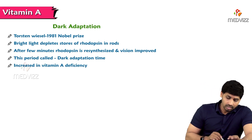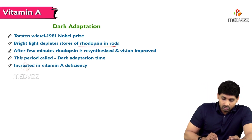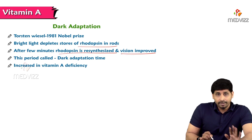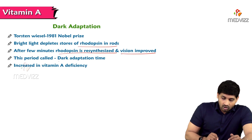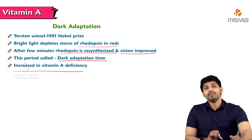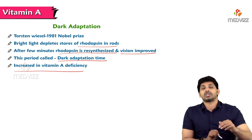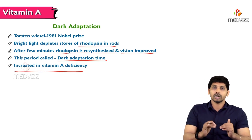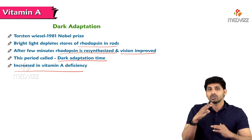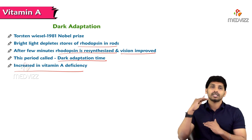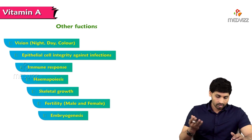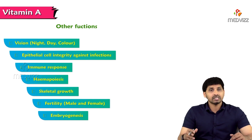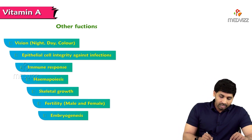The person who extensively worked on dark adaptation time is Torsten Wiesel, who received the Nobel Prize for this work. Bright light depletes the stores of rhodopsin in rods; after a few minutes, rhodopsin is resynthesized and vision is improved. This period is called dark adaptation time, and it increases with Vitamin A deficiency.